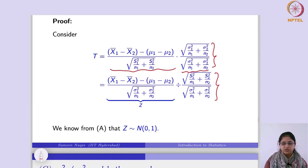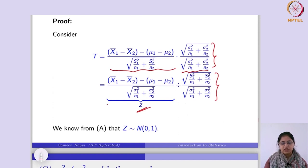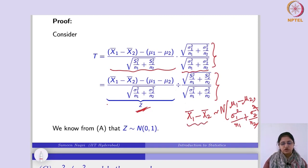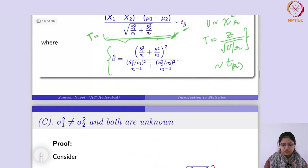Rearranging, one factor moves into the denominator and we can write it as divided by the square root of that term. We know from our earlier result that X̄₁ − X̄₂ follows normal with mean μ₁ − μ₂ and variance σ₁²/n₁ + σ₂²/n₂. Standardizing this gives Z — the standard normal variate — which is (X̄₁ − X̄₂ − (μ₁ − μ₂)) / √(σ₁²/n₁ + σ₂²/n₂). So the standard normal part is identified.